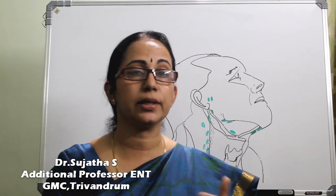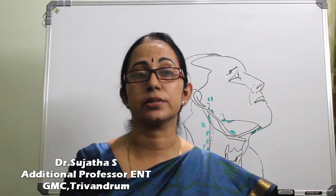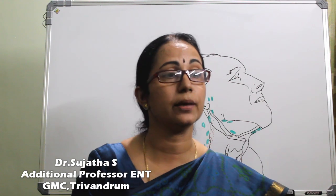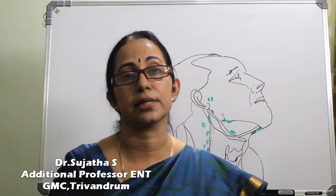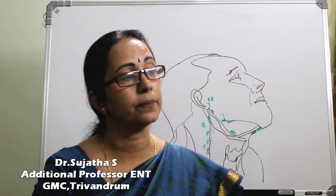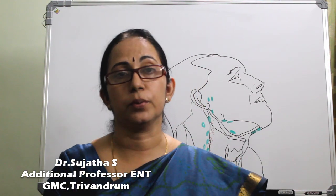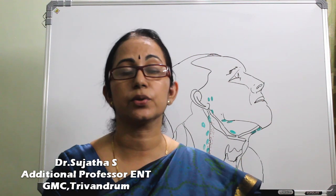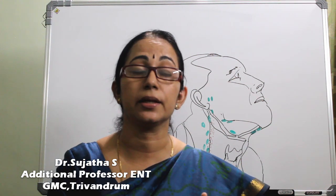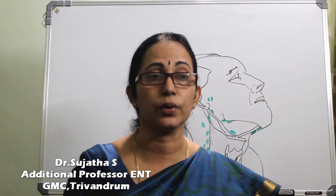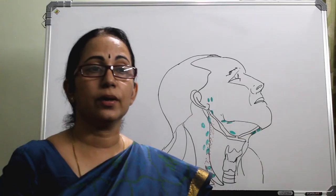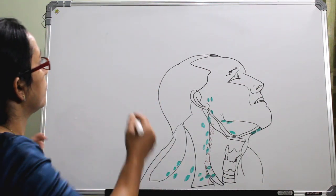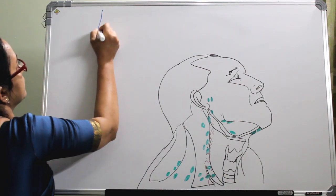For undergraduates, a commonly asked question is to draw and label the Waldeyer's ring, and it is also asked as a short note. For postgraduate students, the lymphatics of the head and neck can be asked as a full essay. This class is on lymph nodes of the head and neck area.